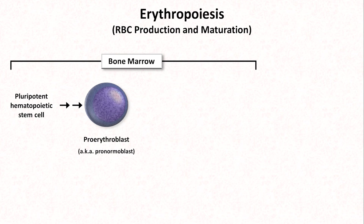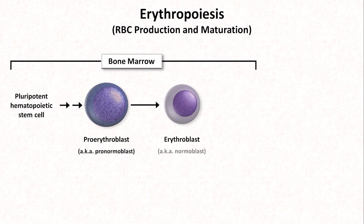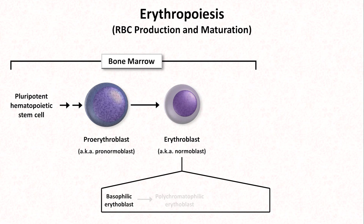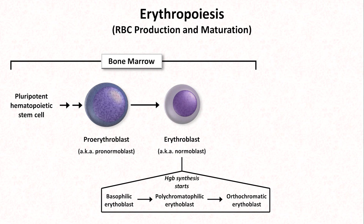As the maturation process continues, the proerythroblast predictably becomes an erythroblast, also known as a normoblast, which is a smaller cell, has a grayer cytoplasm, and a relatively smaller nucleus. The erythroblast stage is subdivided into basophilic, polychromatophilic, and orthochromatic stages. Most notably, the general erythroblast stage is when hemoglobin synthesis starts, which is partially responsible for the shift in the color of the cytoplasm.